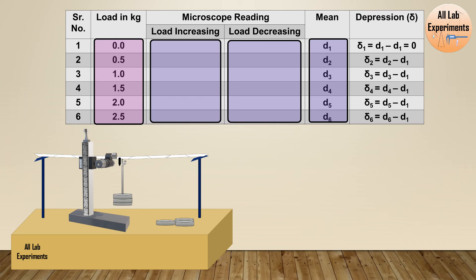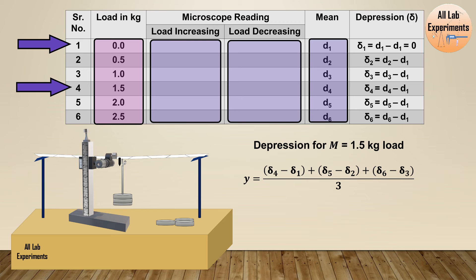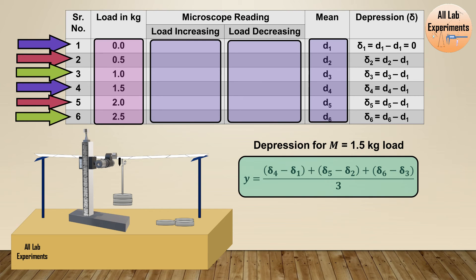Now let us consider we want to calculate depression for M is equal to 1.5 kilogram load. We can perform this calculation further like this: the fourth point where we have hanged a load of 1.5 kilogram and the first point when there is no load at all, we can deduct these values and overall we can get the depression because of 1.5 kilogram load. Similarly, the fifth point which is 2 kilogram load and the second point which is half kilogram load, if we deduct their depressions, we will get a resultant depression because of 1.5 kilogram load. Similarly the case between 6th and the third reading. Finally we take a mean of them and get an average value of the depression because of 1.5 kilogram load hanging on the bar.